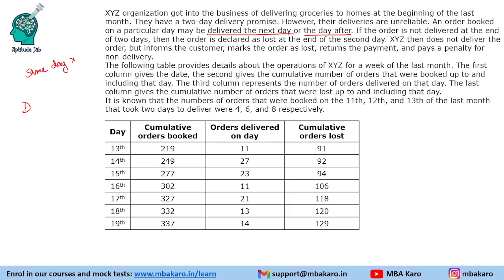So if you book on day D, it will be delivered on D+1 or D+2 days. If the order is not delivered at the end of two days, the order is declared as lost at the end of the second day. XYZ then does not deliver the order but informs the customer, marks the order as lost, returns the payment, and pays a penalty for not delivering. Same day delivery is not possible.